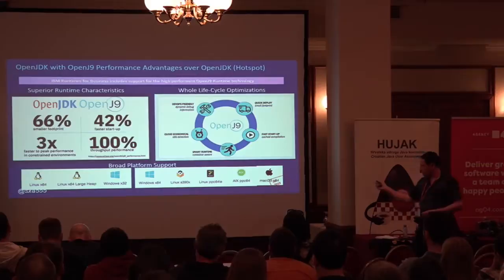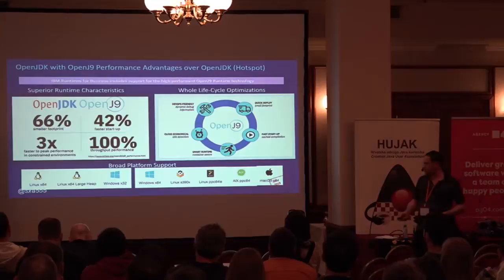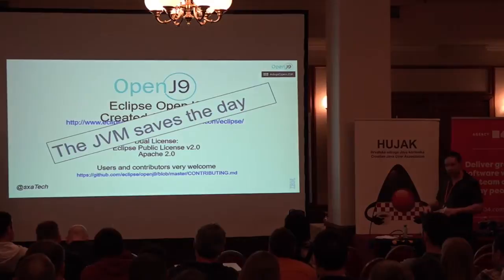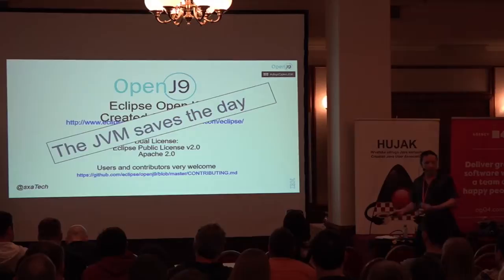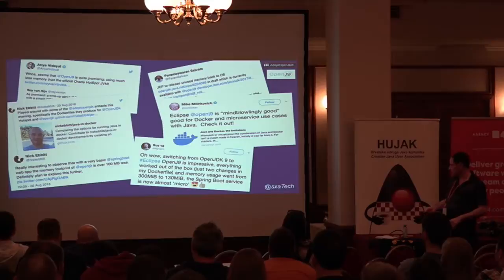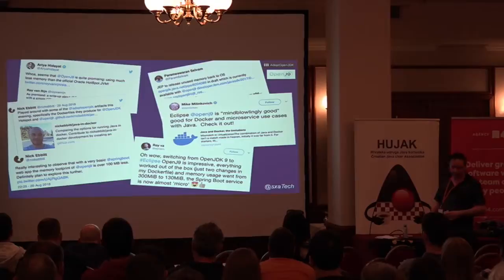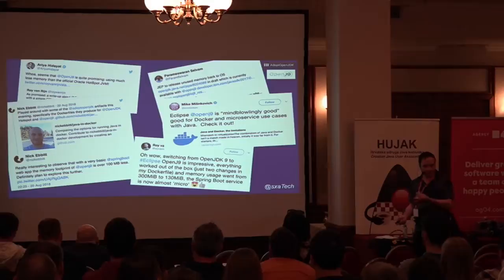So in summary: much smaller footprint, generally faster startup, gets up and running faster without losing performance. We run it on lots of platforms — macOS support was added just a couple of months ago and you can download those builds from AdoptOpenJDK. OpenJ9 used to only be available inside an IBM product, but now you can just download it and use it. Try it with your own application and let us know how it goes — generally you should see the same improvements shown in these slides.